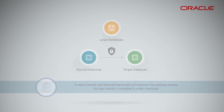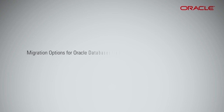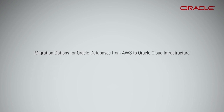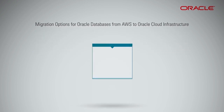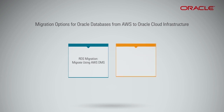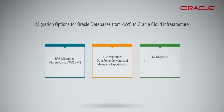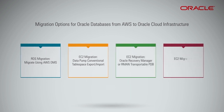There are several options to migrate Oracle databases from AWS to Oracle Cloud Infrastructure. The most popular among them are: RDS Migration using AWS DMS; EC2 Migration using Data Pump conventional table space export or import; EC2 Migration using Oracle Recovery Manager, RMAN, Transportable PDB; and EC2 Migration using RMAN.